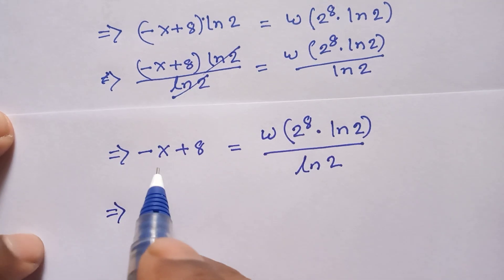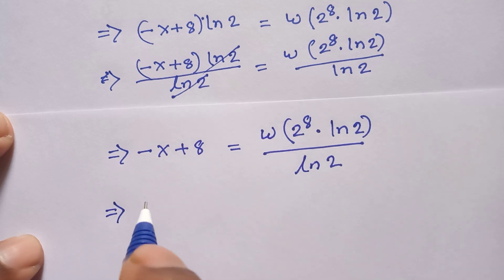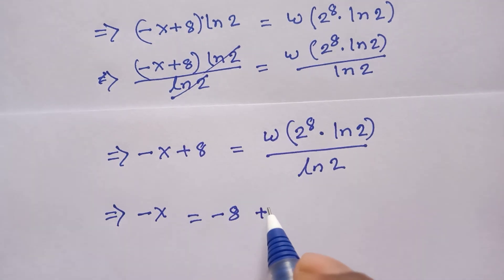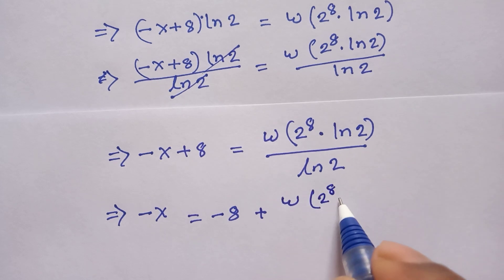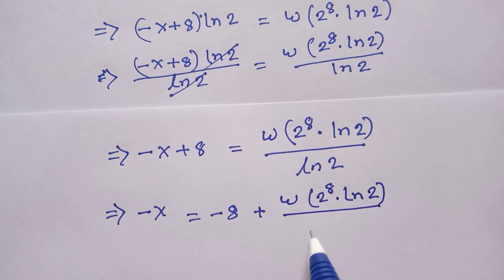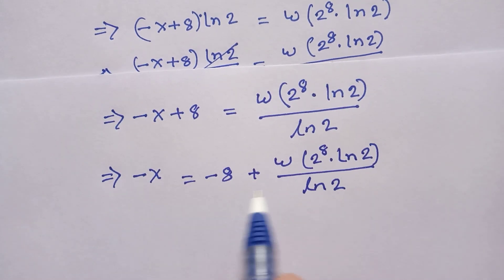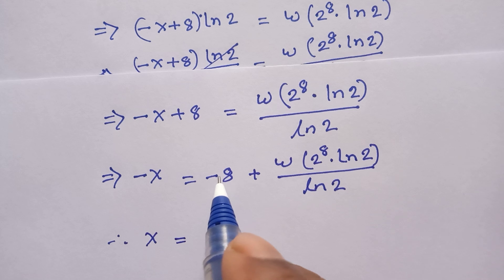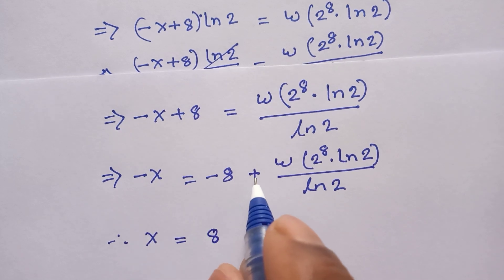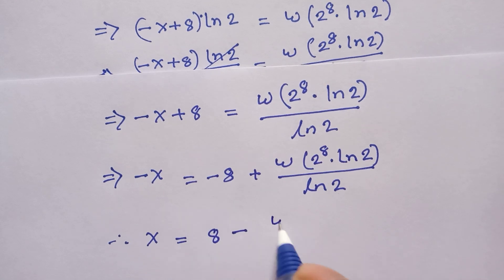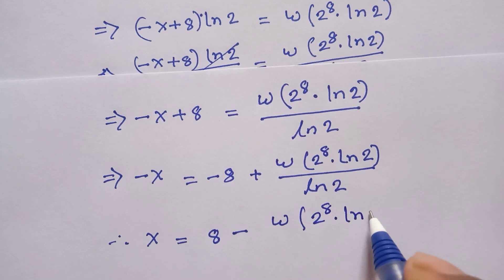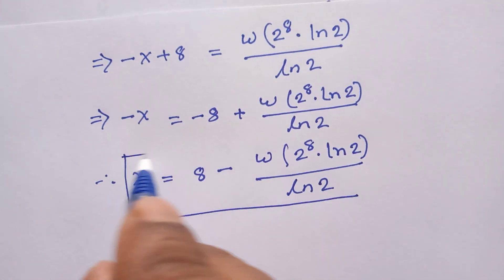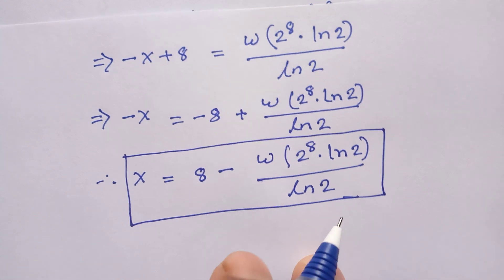We need the value of x, so move the +8 to the right side: −x equals −8 plus W(2^8 times ln(2)) divided by ln(2). Multiplying both sides by −1: x equals 8 minus W(2^8 times ln(2)) divided by ln(2). This is the value of x. Thanks for watching — if you like this video, please subscribe to my channel for more videos. Bye bye!